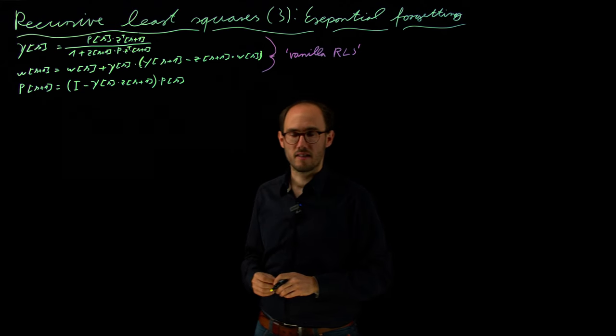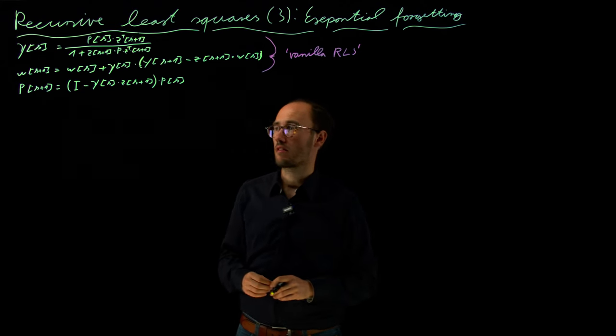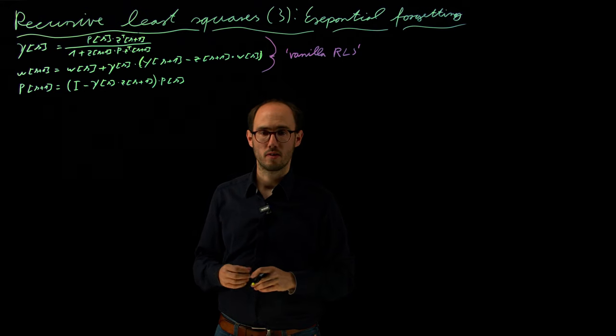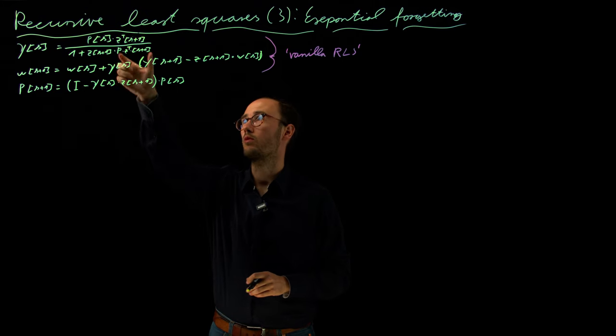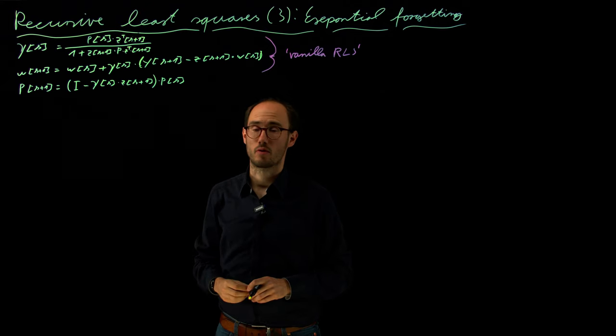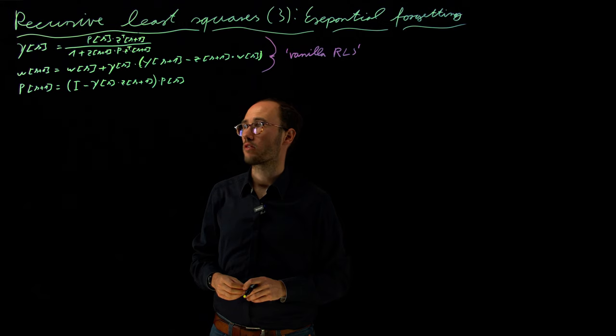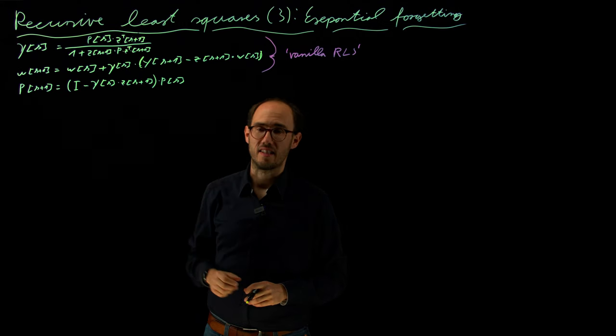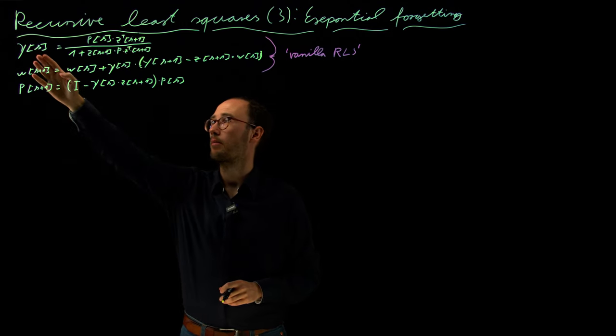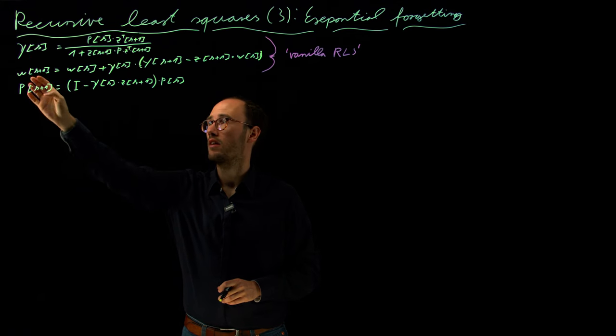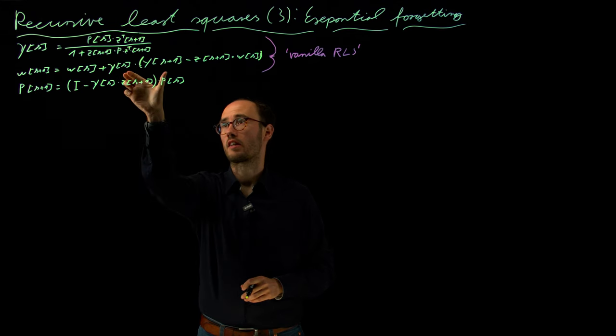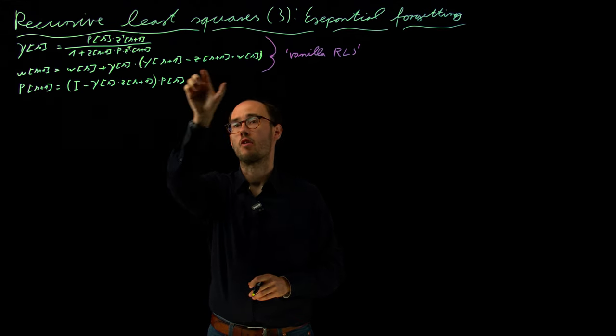What was the core ingredient of this estimator? It was basically a recursive processing of a new data sample Z or Z transpose, which we get as an observable in our regression vector. With this new data bit, we basically update our correction factor. Then with the updated correction factor, we can basically update our parameters.